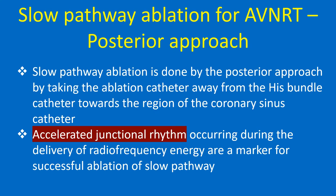Slow pathway ablation is done by the posterior approach, taking the ablation catheter away from the His bundle catheter towards the region of the coronary sinus catheter. Accelerated junctional rhythm occurring during delivery of radiofrequency energy is a marker for successful ablation of the slow pathway.